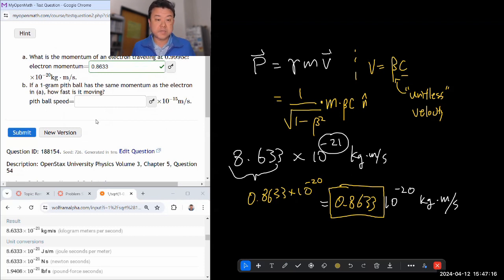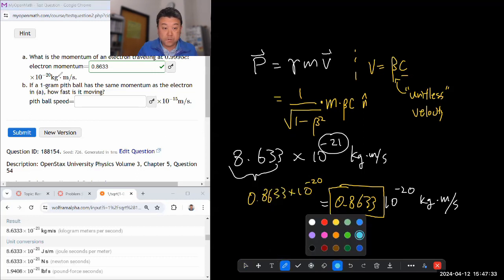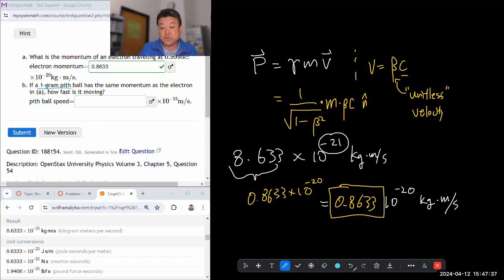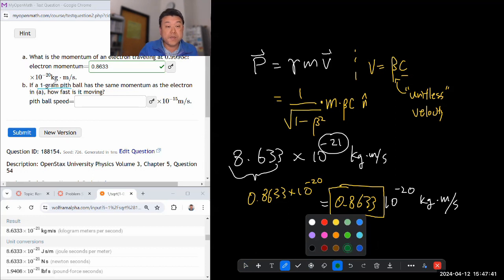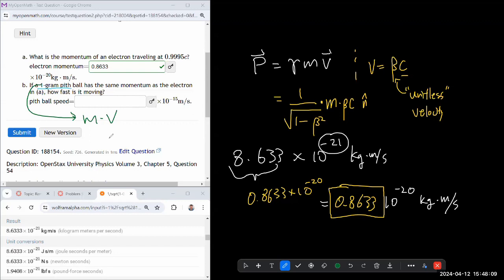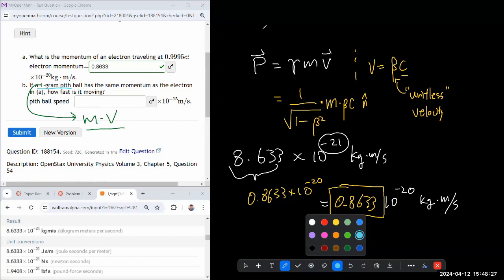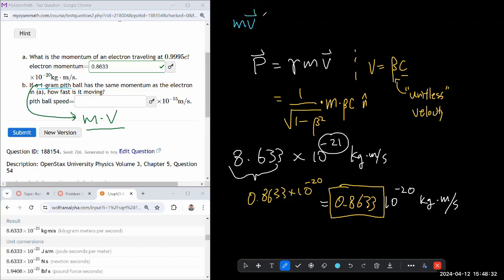If a one gram pitch ball has the same momentum as the electron in A, how fast is it moving? I gotta solve it backward, right? So I think I'm gonna make a wild guess that this pitch ball will be at non-relativistic speeds, which means I can do this much simpler formula. So I can say momentum of the pitch ball is mass times velocity. Yeah, so I'm going to express the momentum of the pitch ball in the non-relativistic mechanics. But we are saying same momentum as the electron in A. So we can use this. So I guess this is what I end up saying. I can say in non-relativistic mechanics, mass times velocity is